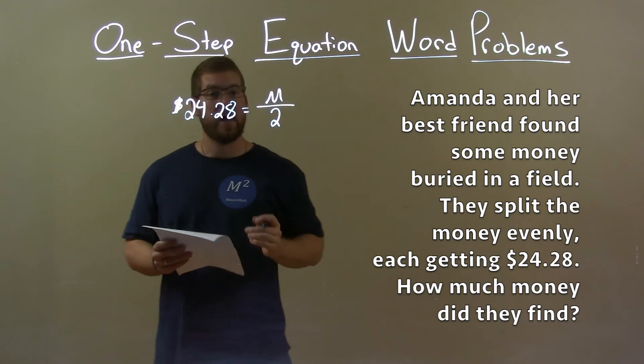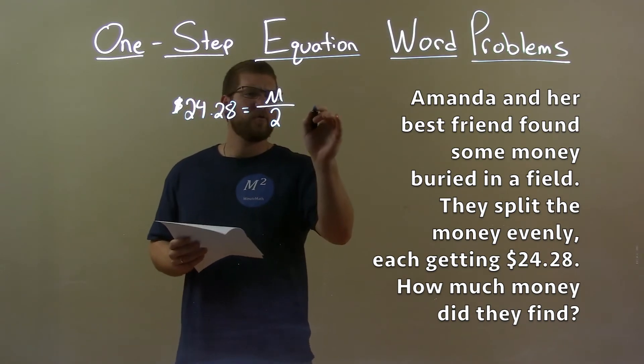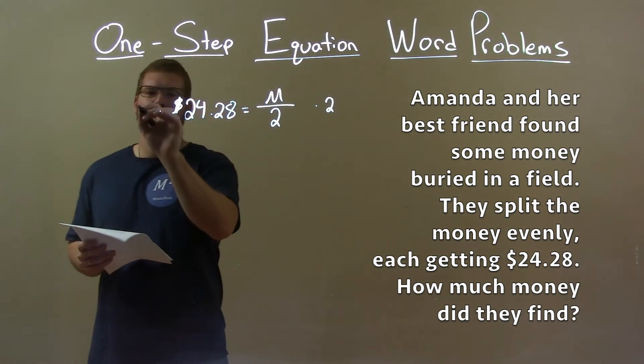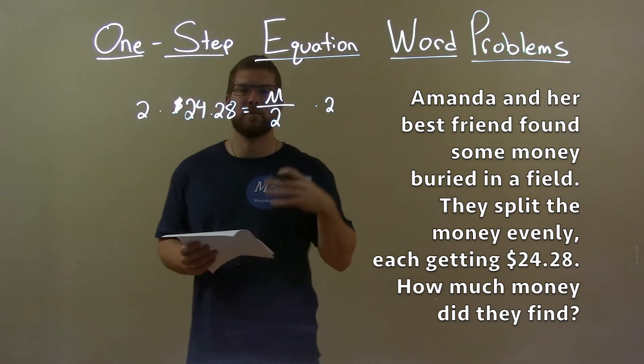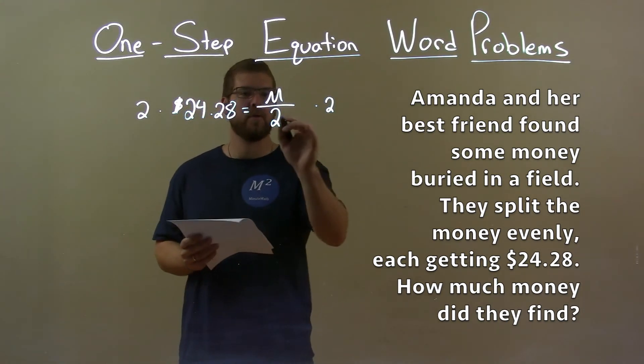So now let's solve for M, the total amount. I multiply 2 to both sides. Why do I do that? Well, if I'm divided by 2, opposite of division is multiplication, right?